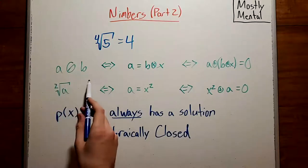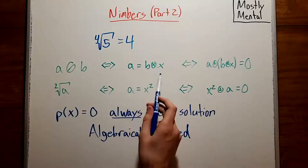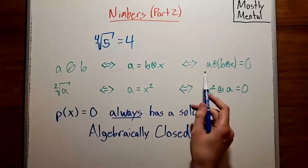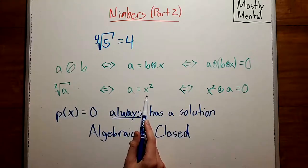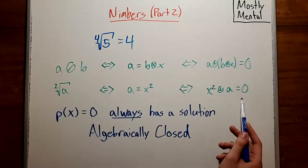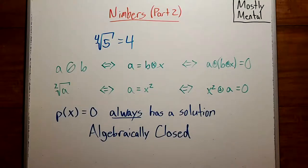Division is really finding a number x that solves a equals bx, or a plus bx is zero. And the square root is really finding a number x that solves a equals x squared, or x squared plus a is zero. And more generally, we might want to ask if there's some number x that solves p of x equals zero for some given polynomial p. And for all non-constant polynomials, the answer is yes. Every polynomial has a solution. In other words, the nimbers are an algebraically closed field.